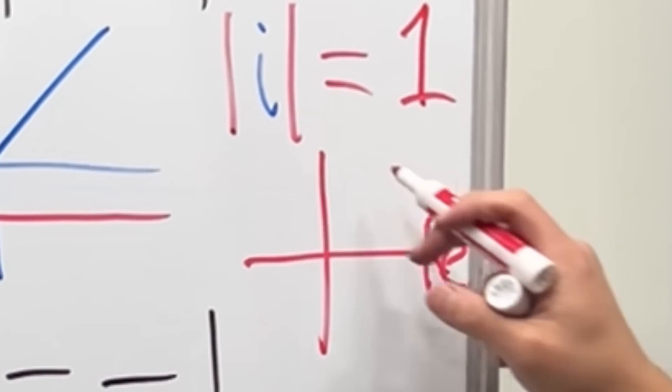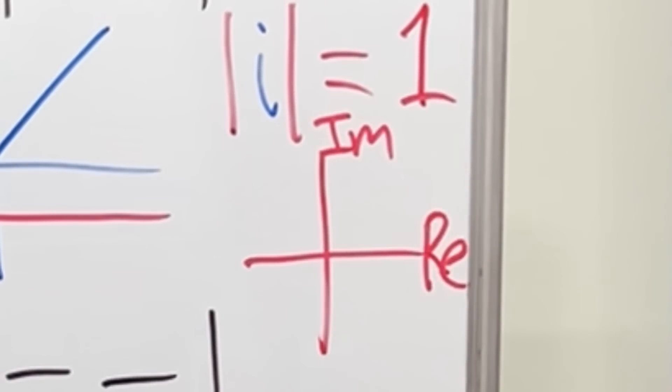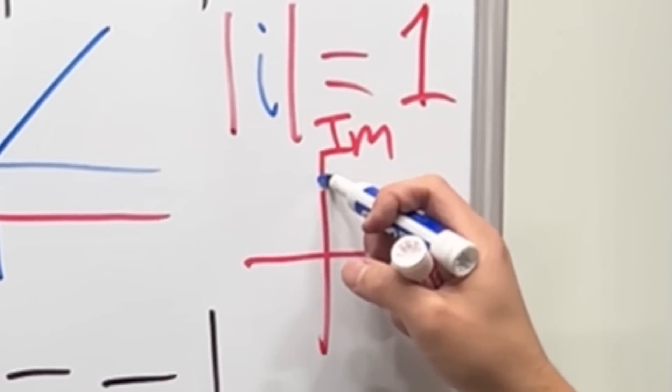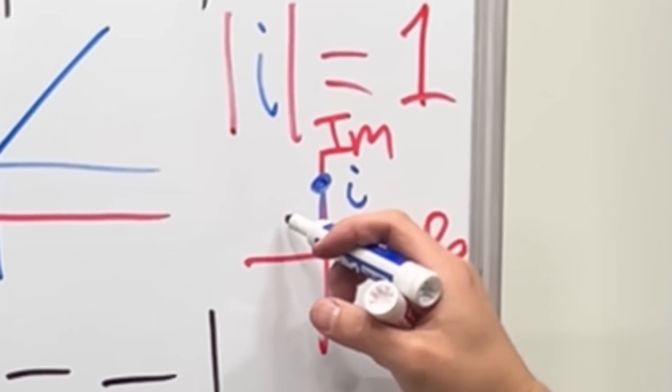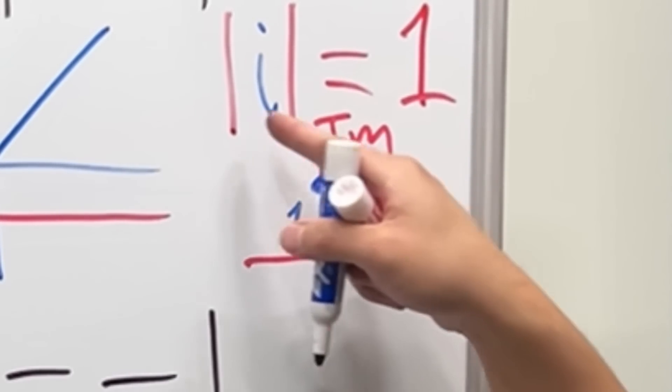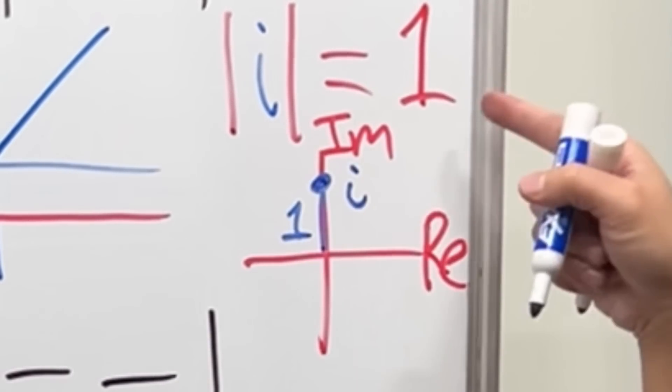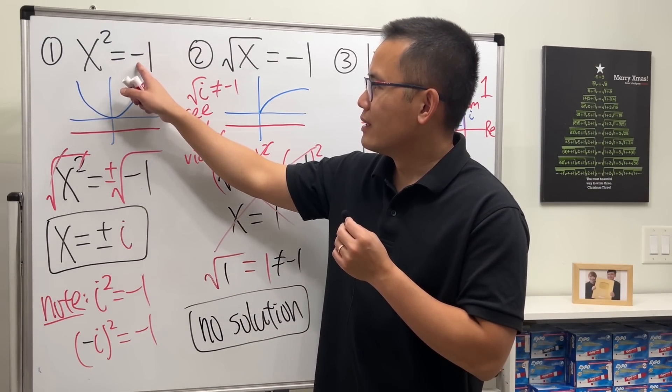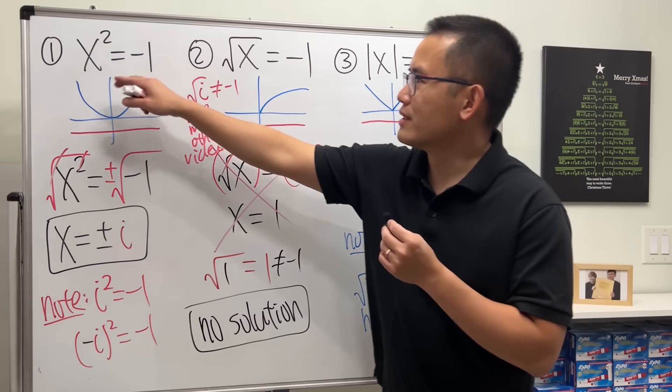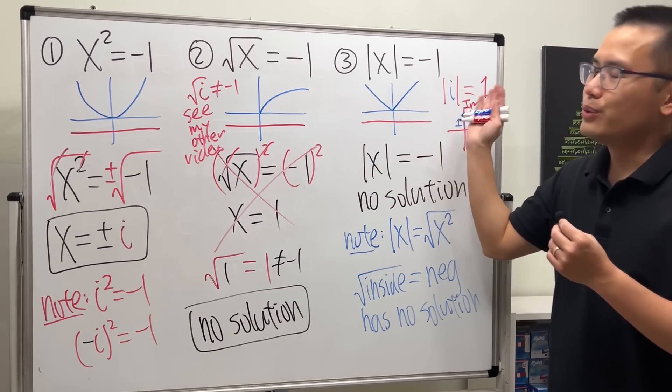So if you look at the picture real quick on the complex plane, this is the real axis, this is the imaginary axis, i is somewhere here and the distance is indeed equal to one. So the absolute value of i is equal to one, so i only works for the first equation when you have the second power, not the other two cases.